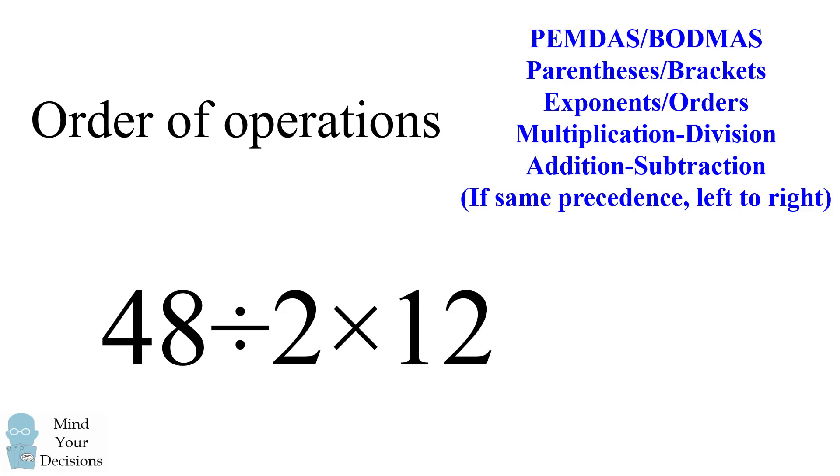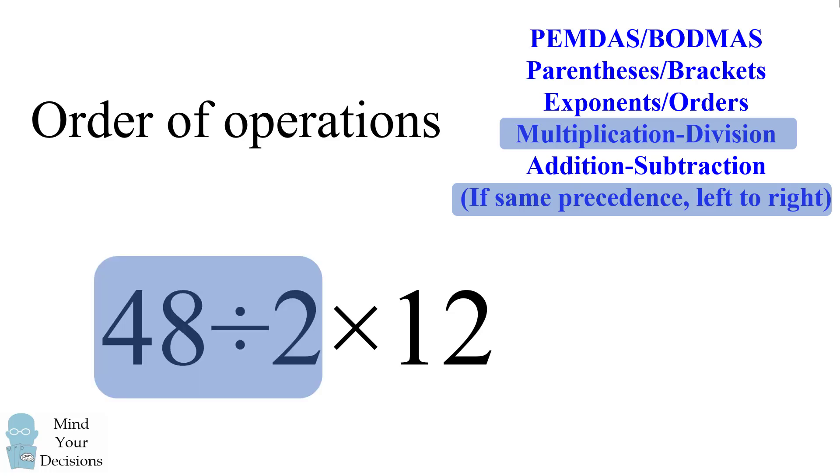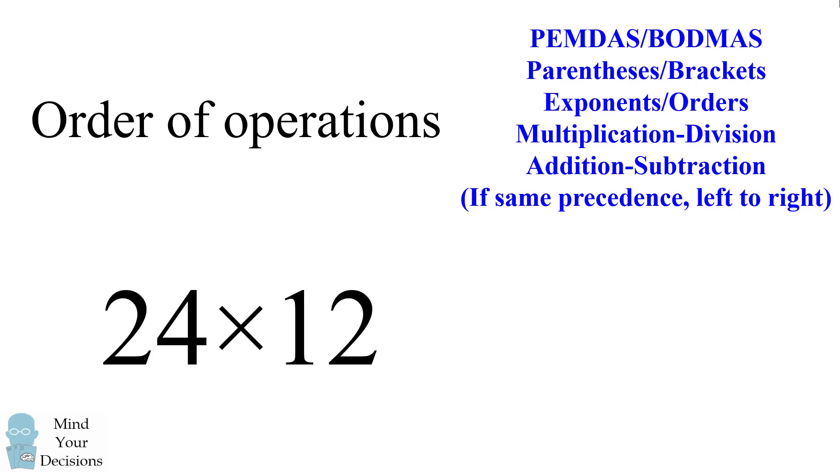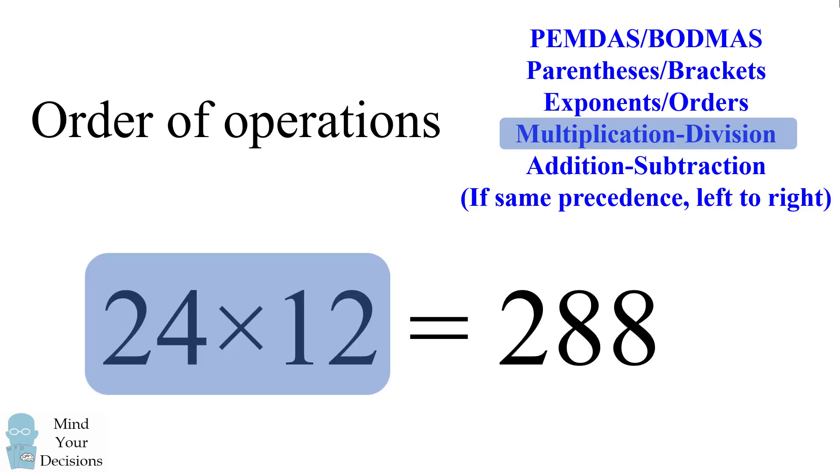We now continue with the order of operations. We have a division and a multiplication. As we have operations of the same precedence, we should evaluate them from left to right. So we take 48 divided by 2, and that gets us to 24. And now we have a final expression of a multiplication, which is 24 times 12. And that is equal to the correct answer of 288.